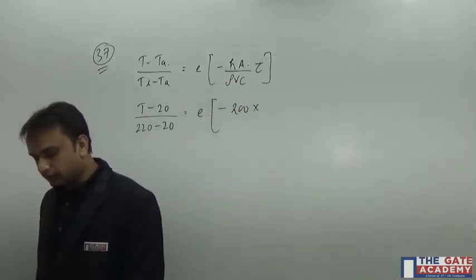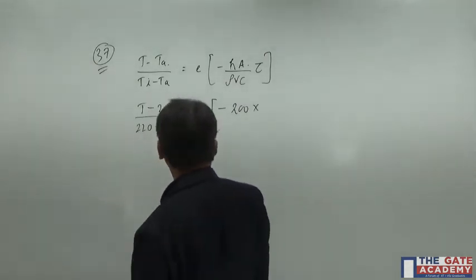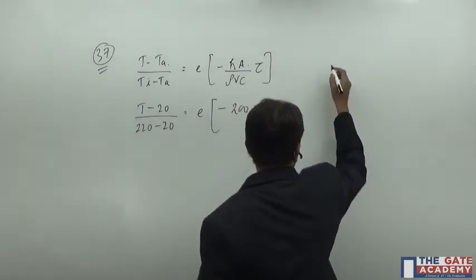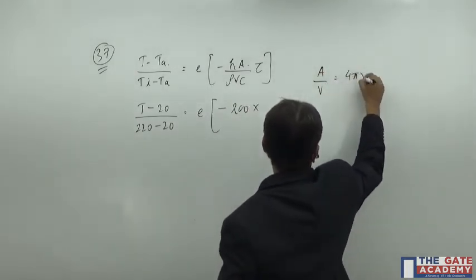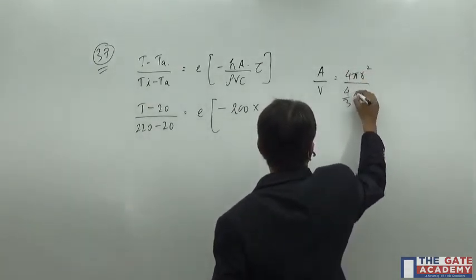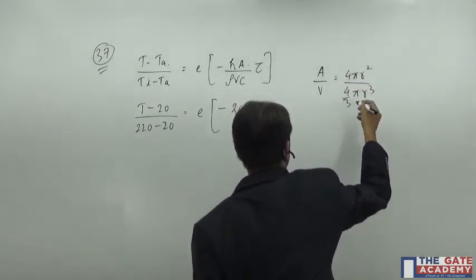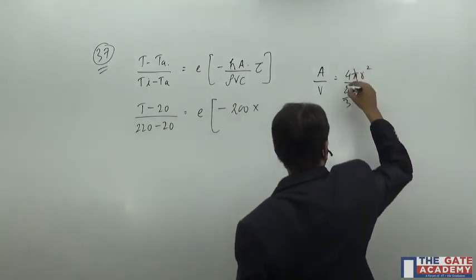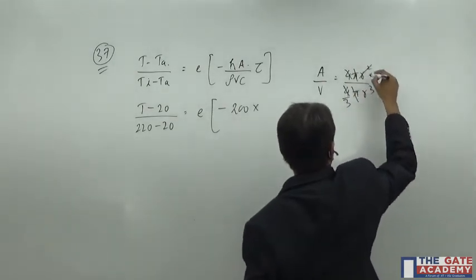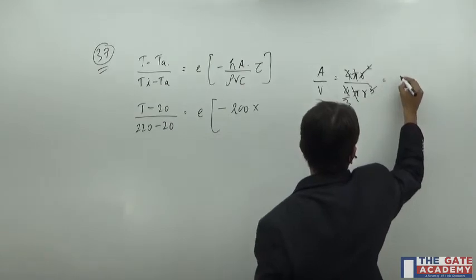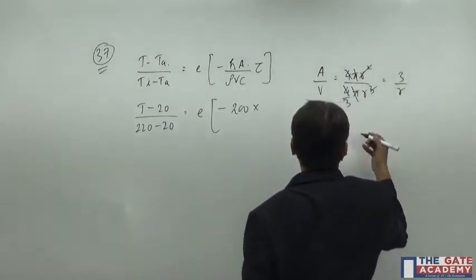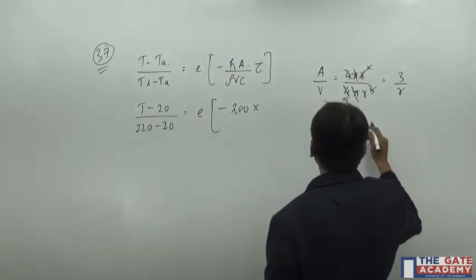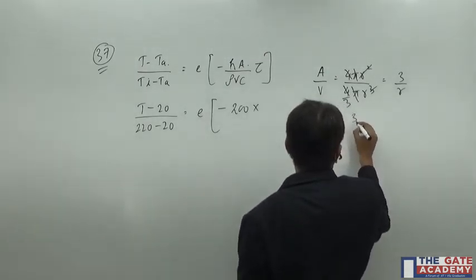Or simply you can take the ratio of area and volume. Area is 4 pi R square, whereas volume is 4 by 3 pi R cube. Let us simplify it a little bit. R square cancels, so it comes to 3 by R. And what is R? R is nothing but D by 2. So yes, that's all.